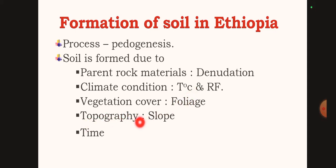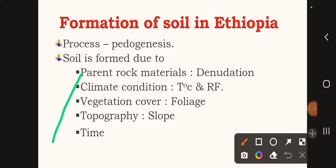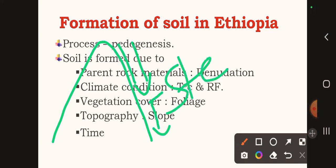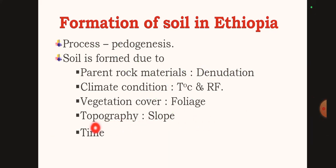Topography is another factor. In mountainous areas with steep slopes, erosion is high. So soil formation has five components: parent rock material, climate condition, vegetation cover, topography, and time.